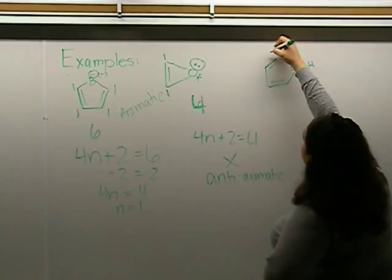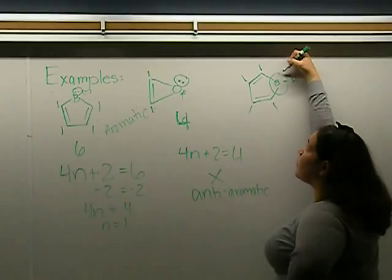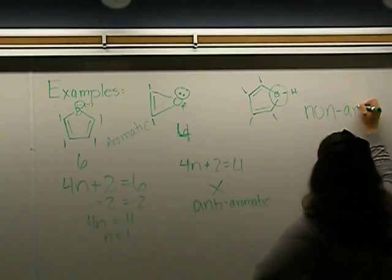And this molecule here has 1, 2, 3. And boron does not have any lone pair electrons or pi bonds. So it is non-aromatic.